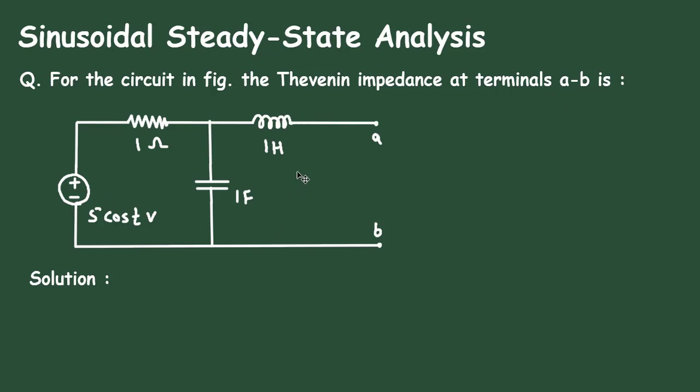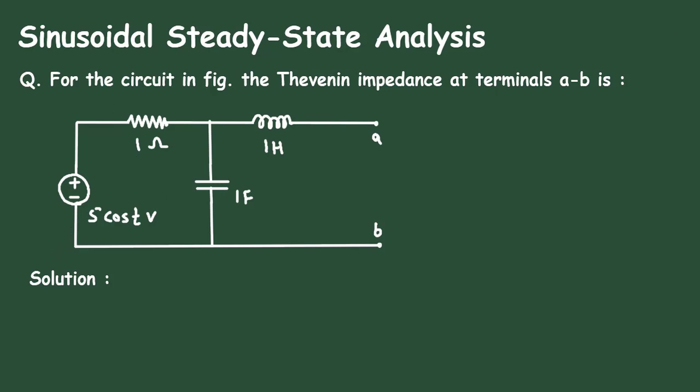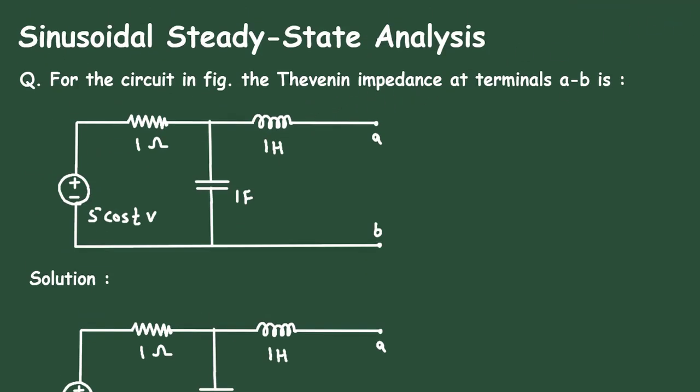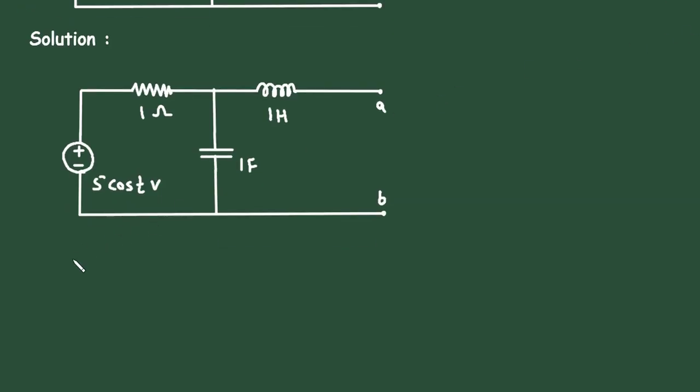Here for this circuit, we have to find its Thevenin impedance at terminal A and B. So first of all, we will take this circuit. Now, to find the value of Thevenin impedance, turn off all independent sources.